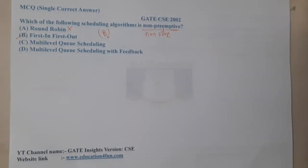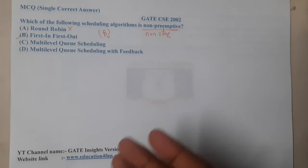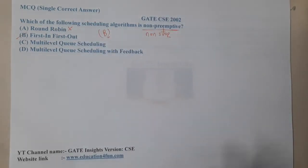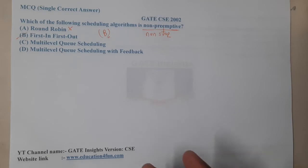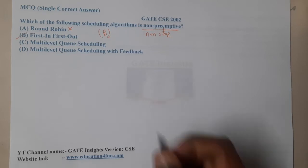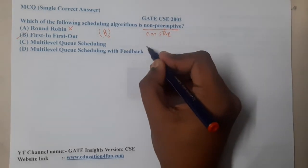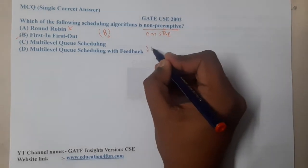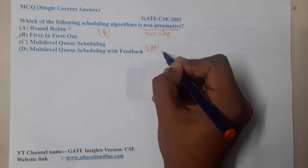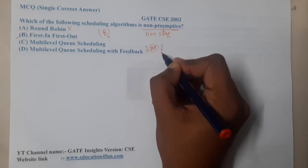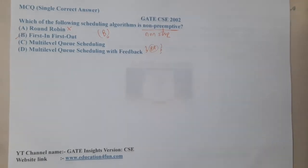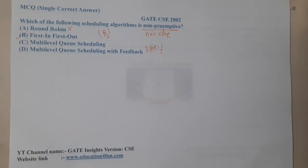Options C and D are combinations of different schedulers. In both of them, most probably we are going to have Round Robin. With that understanding, we can say that both of them are preemptive ones.